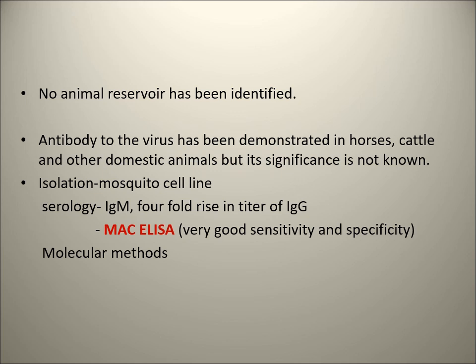There is no animal reservoir for Chikungunya. For isolation the same arbovirus methods apply using mosquito cell lines. For diagnostic purposes, IgM antibody detection is done - MAC-ELISA is used. For IgG, a four-fold rising titer is required. The best diagnostic test is MAC-ELISA (IgM antibody capture ELISA). Molecular methods including RT-PCR can also be used for Chikungunya. No vaccine is available for this virus, although some trials are ongoing.